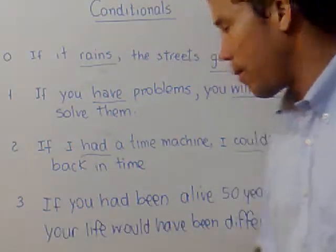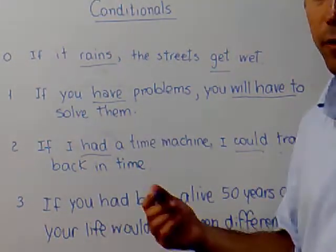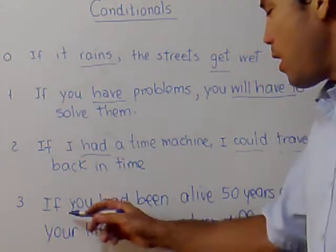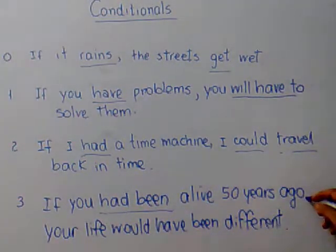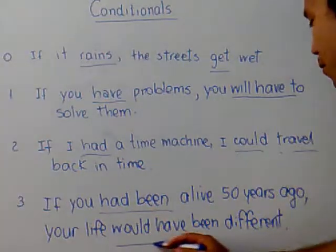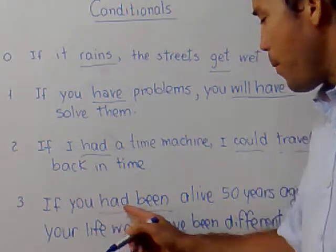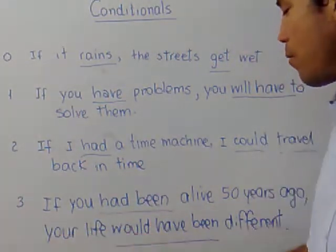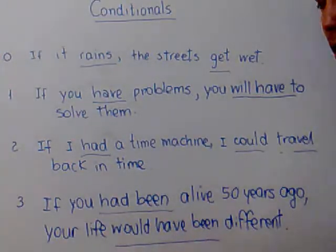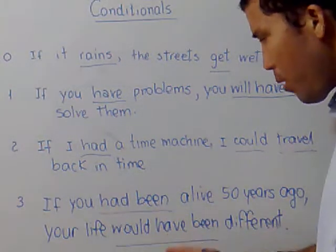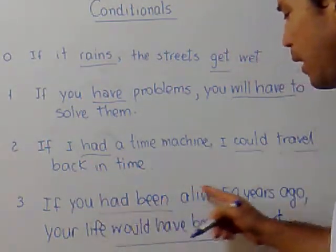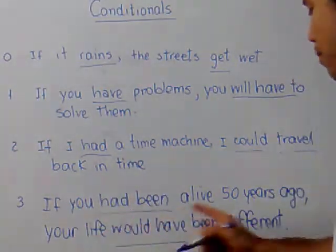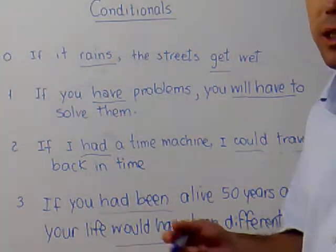The third conditional refers to the past and it's also unreal — that's why it's called the past unreal conditional. For example: 'if you had been alive 50 years ago, your life could have been different.' I use the past perfect in the condition clause, and the modal plus present perfect to refer to the past. So 'if you had been alive' means you weren't alive 50 years ago, and 'your life would have been different' means your life was not different.